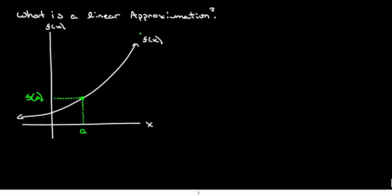Now, let's say we wanted to know — we took another point somewhere over here. Let's just call this an arbitrary x. It's at a height of f of x. We might want to know how much, as we go from a to x — let's just call that delta x — we might want to know how much the actual function changes. And the actual function changes — let's call that delta y.